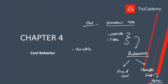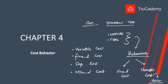We should be able to understand variable cost behavior, fixed cost behavior, step cost, and mixed cost. Mixed cost has characteristics of both variable and fixed at the same time. We will look at a method called the high-low method, which we use to split mixed cost between its variable portion and fixed portion.